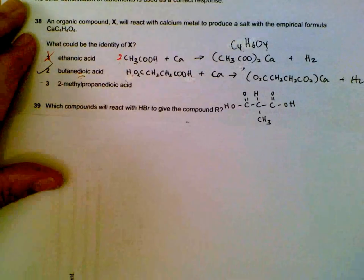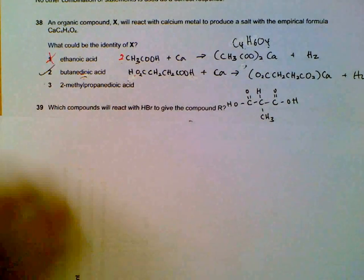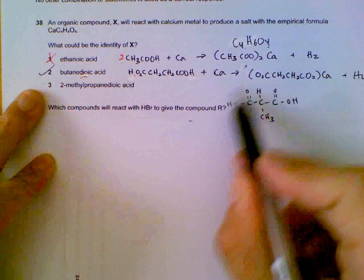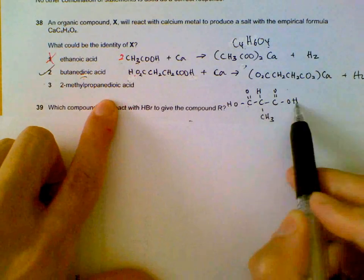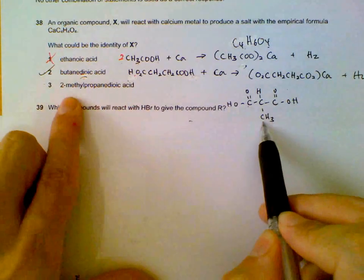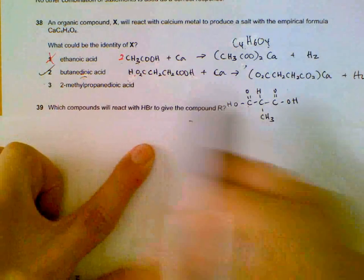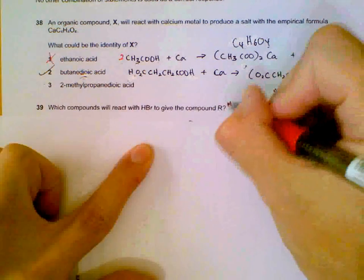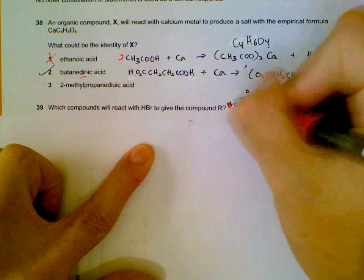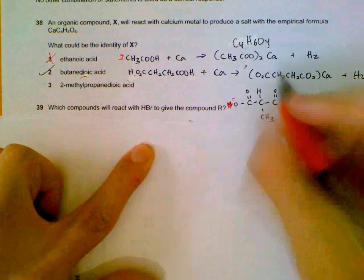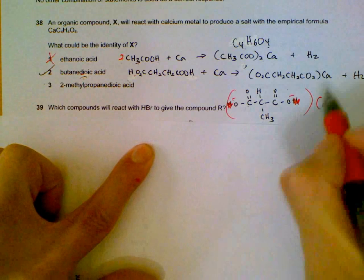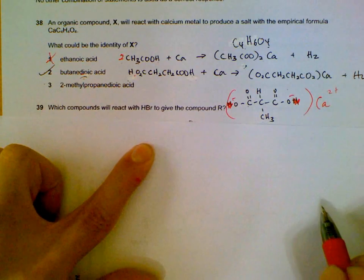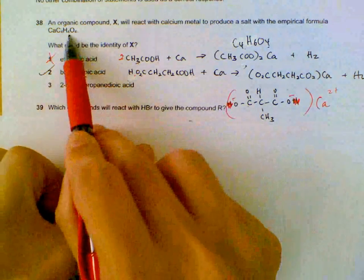The third acid, 2-methylpropanedioic acid, sounds complicated but drawing the structure: propanedioic acid with 'dioic' meaning two acidic groups, plus a methyl side chain. Similar to butanedioic acid, both hydrogens are released. Because it's 2 minus, it reacts in a 1:1 ratio with calcium 2 plus, giving a salt with the same empirical formula. So statement 3 is also correct.